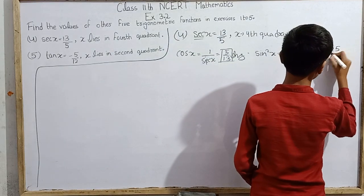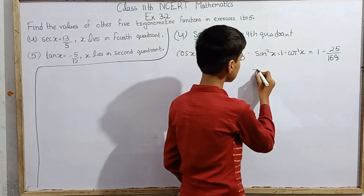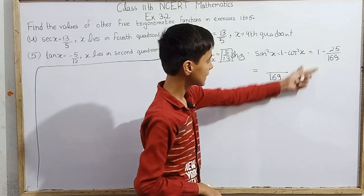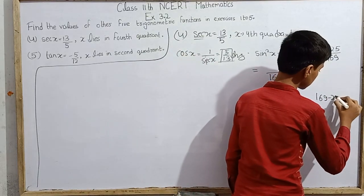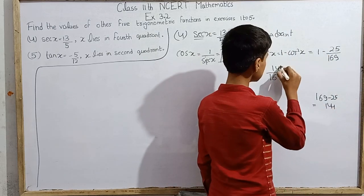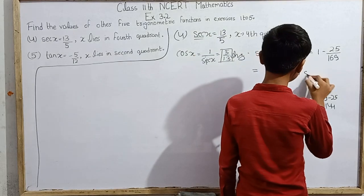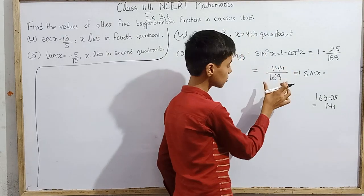This is 1 minus 25 over 169. The common denominator is 169, so we have 169 minus 25 in the numerator, which equals 144. So sin squared x equals 144 over 169. Taking the square root, sin x equals plus or minus 12 over 13.